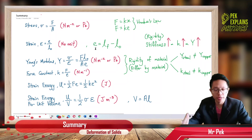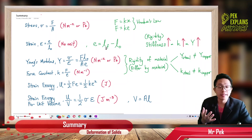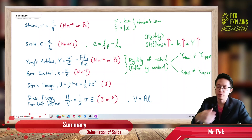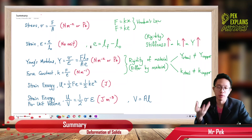How to get elongation? Elongation is the final length minus the initial length. So if you want to get the final length, you use the original length plus elongation.